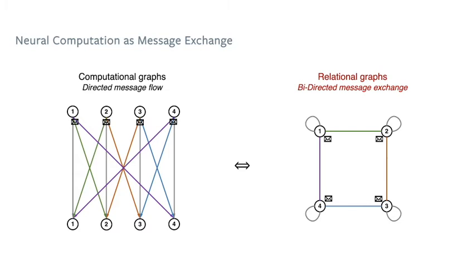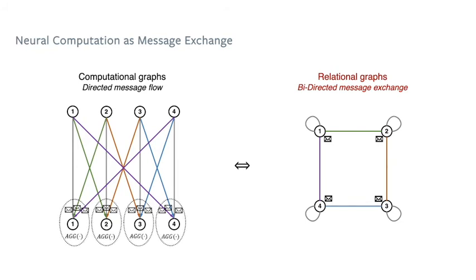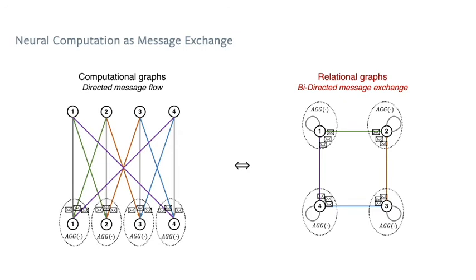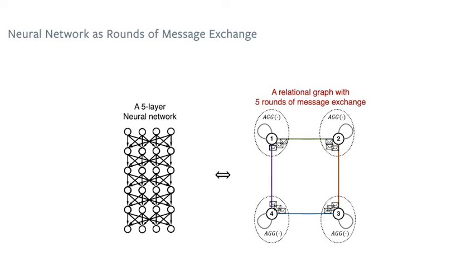Here's a small illustration comparing the computational graph and the relational graph. In the original computational graph, the messages — basically the computed activations — are directly passed from input to output neurons and aggregated together. However, in the relational graph representation, messages are exchanged between two connected nodes and then aggregated together. In our framework, it is also easy to model a multi-layer neural network as multiple rounds of message exchanges. For example, a five-layer neural network is simply five rounds of message exchange and aggregation between a fixed set of nodes.